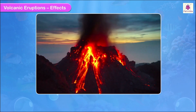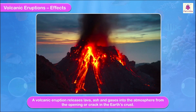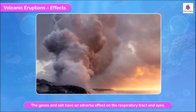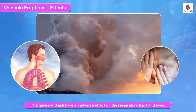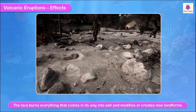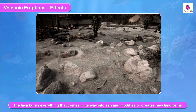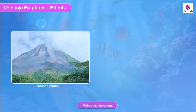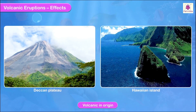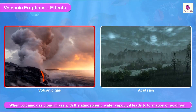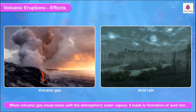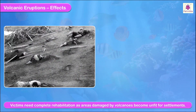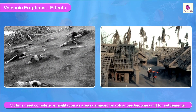Effects of volcanic eruptions: A volcanic eruption releases lava, ash, and gases into the atmosphere from the opening or crack in the earth's crust. The gases and ash have an adverse effect on the respiratory tract and eyes. The lava burns everything in its way into ash and modifies or creates new landforms — the Deccan Plateau and Hawaiian Islands are volcanic in origin. When volcanic gas clouds mix with atmospheric water vapor, it leads to the formation of acid rain. Victims need complete rehabilitation as areas damaged by volcanoes become unfit for settlements.